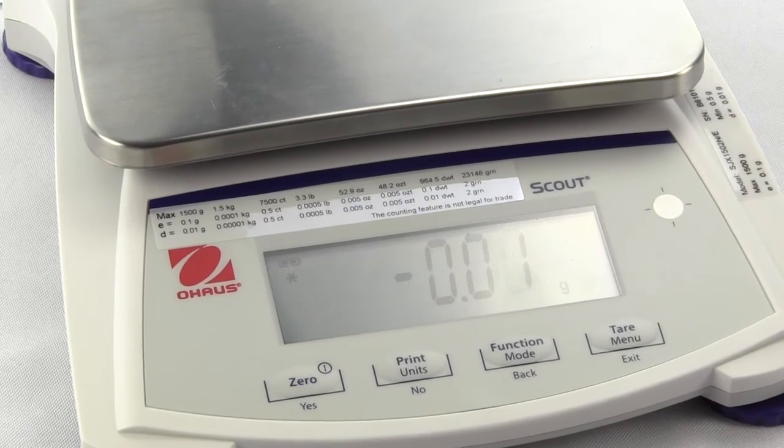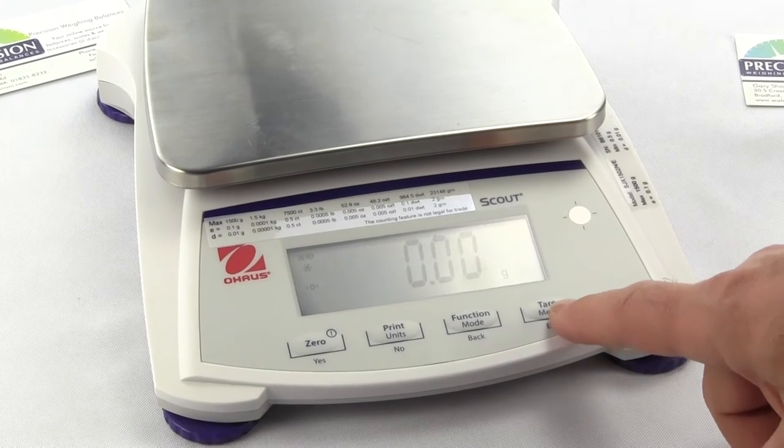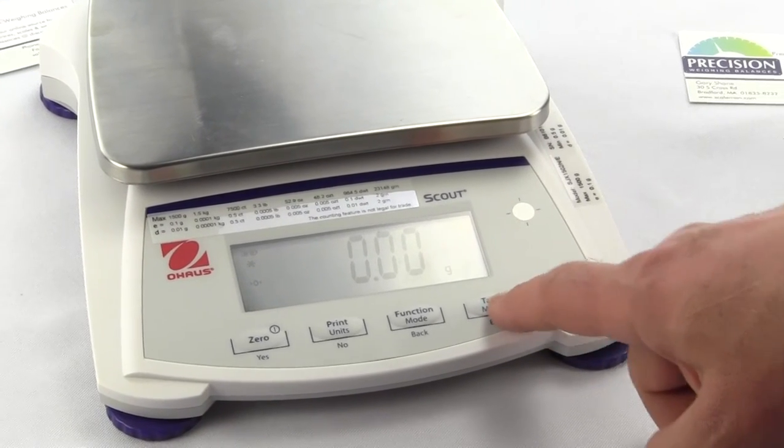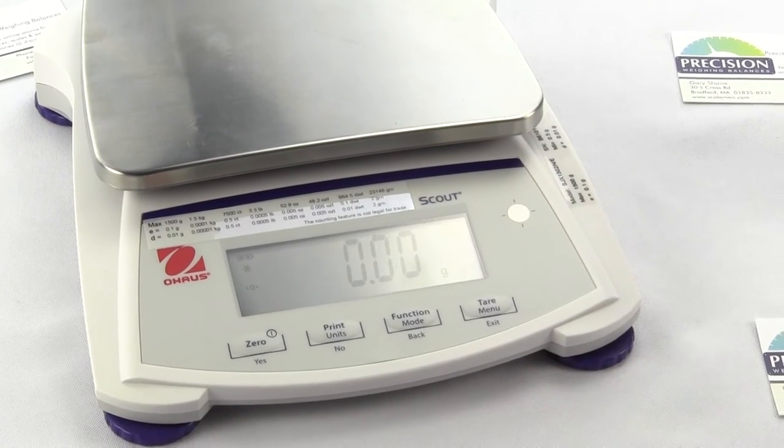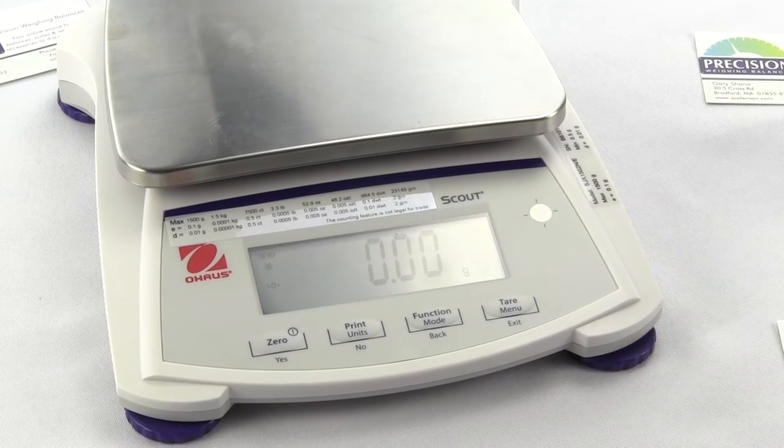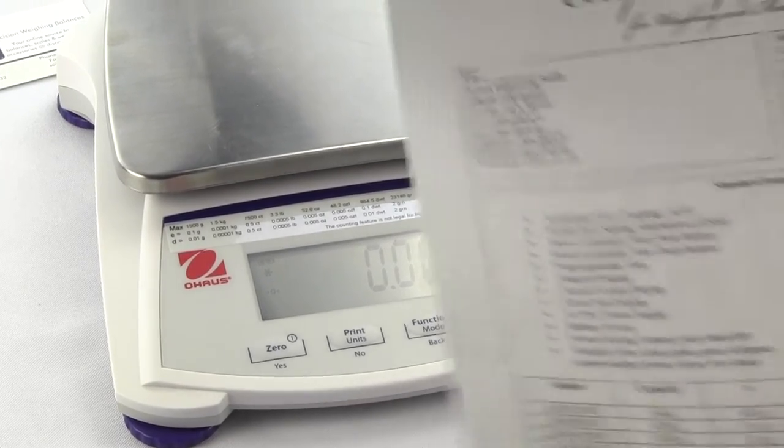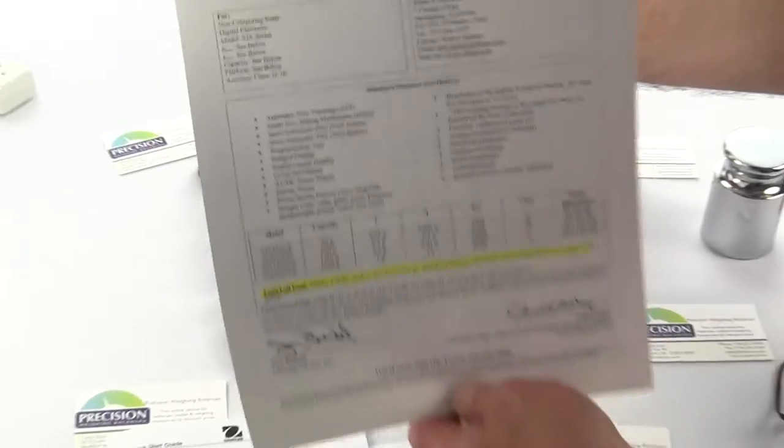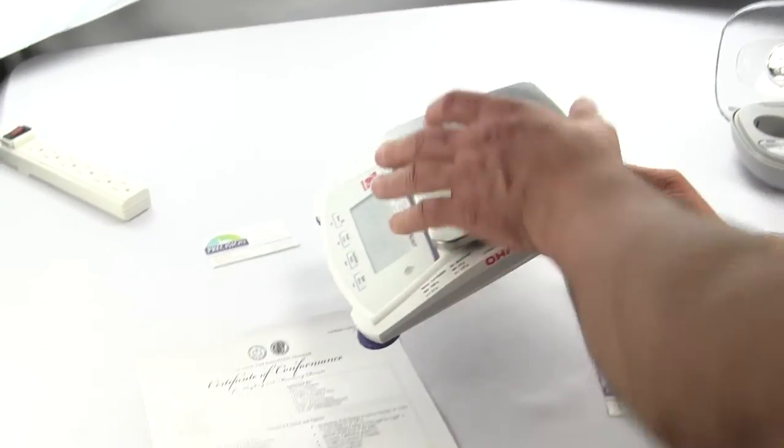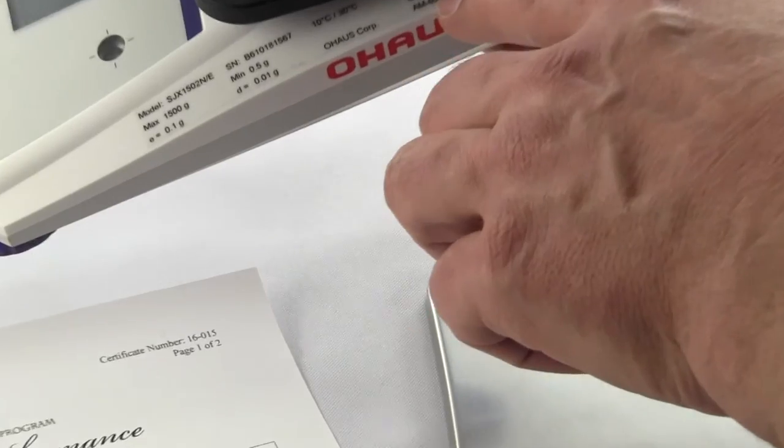There are many people that buy this scale and they don't even need it for a legal for trade application. They're buying it because the SJX series costs less than the SPX because it's sold to the jewelry market, so you can save yourself a lot of bucks buying this scale. Big selling point - this is the certificate. You can download it online. If you look right here, it shows you the CSC, it's 16-015.